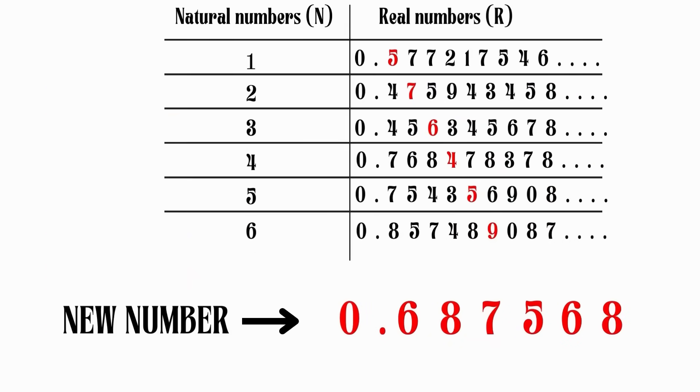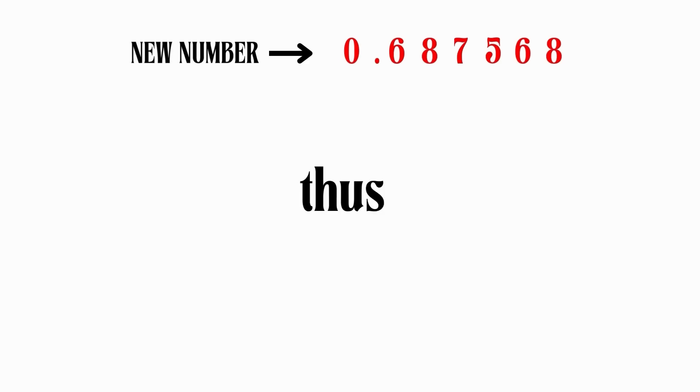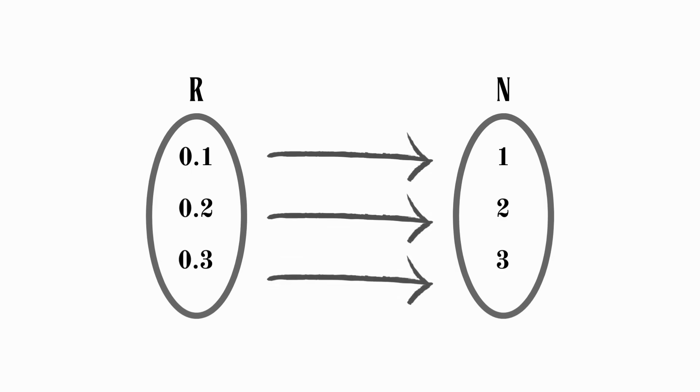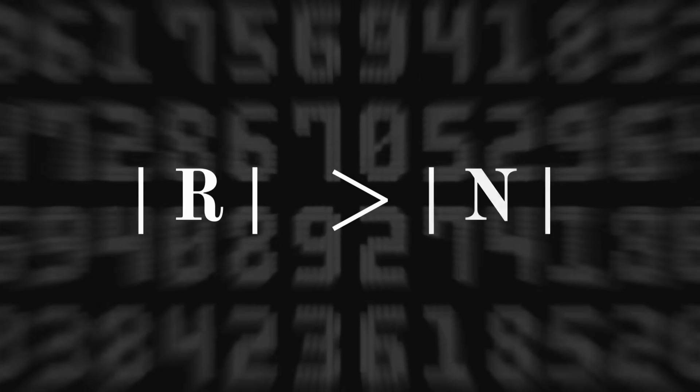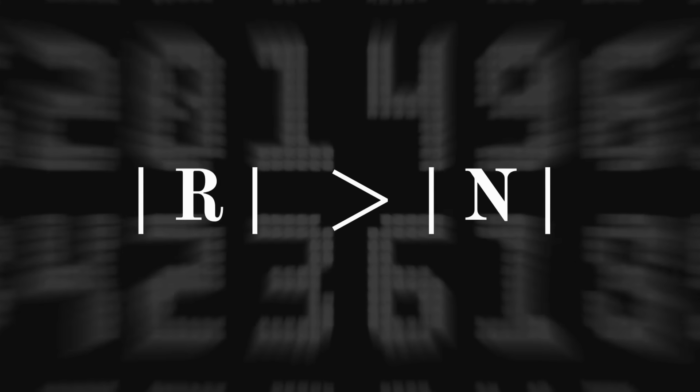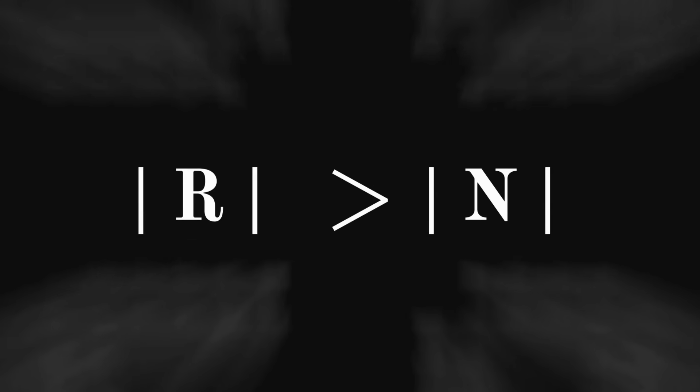So, is our new number a part of the list? Well, it can't be the first number in the list, since the first digits don't match. It can't be the second number either, since the second digits don't match. Our new number will always differ from any given number on the list, since there will always be at least one digit that does not match the digit on the diagonal. Thus, we have a real number that isn't part of the list, meaning we haven't achieved a 1 to 1 pairing, which contradicts our earlier assumption. Even if we insert this new number into the list, we can just repeat this process to generate more and more new real numbers. This implies that there are more real numbers than there are natural numbers. The idea that some infinites are bigger than others is counterintuitive, but it is a true fact.